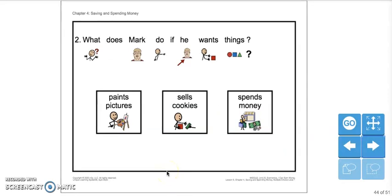What does Mark do if he wants things? Paints pictures, sells cookies, or spends money? Spends money. That's right. If Mark wants something, he spends money.